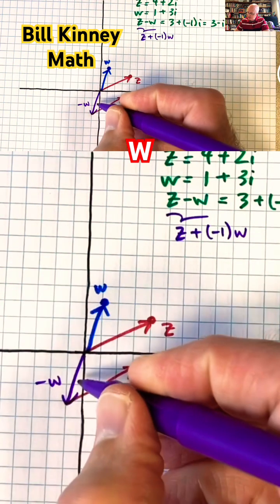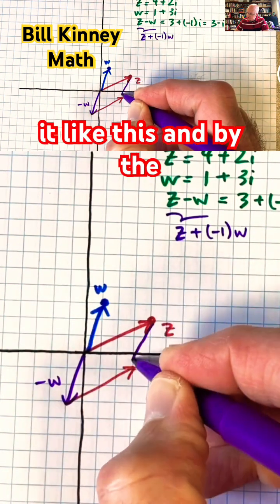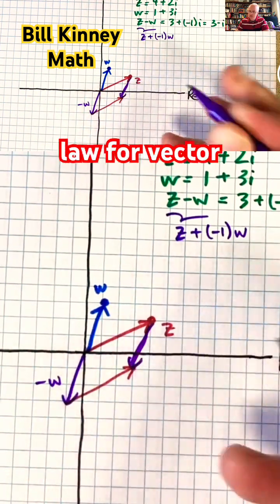And translate negative w over here and plot it like this. And by the parallelogram law for vector addition,